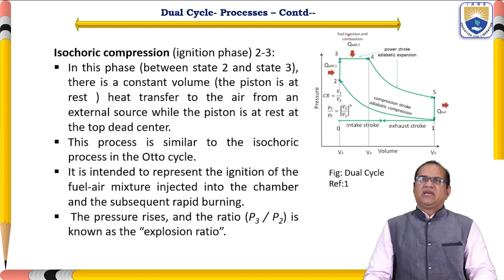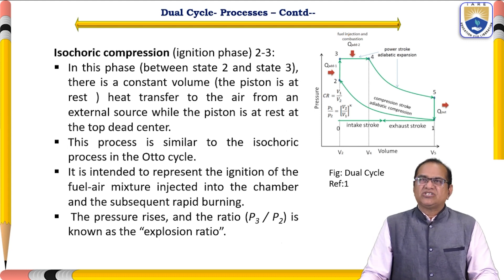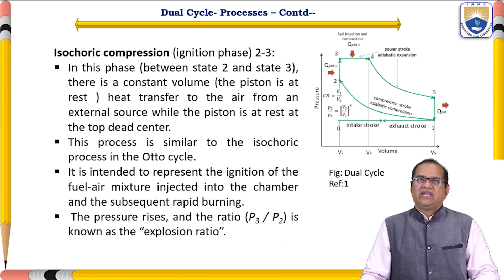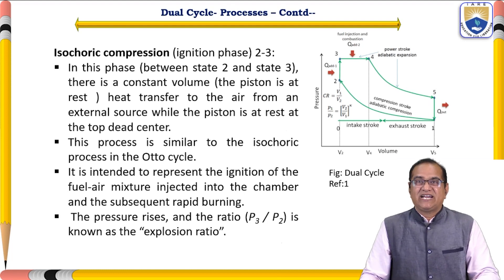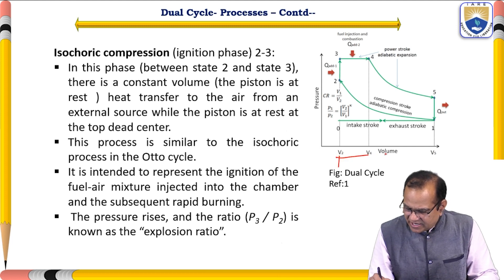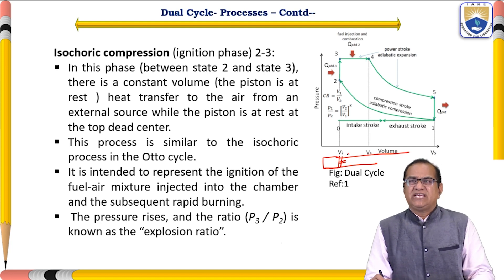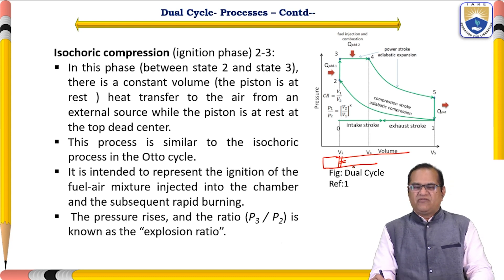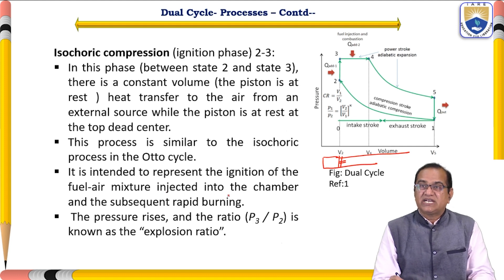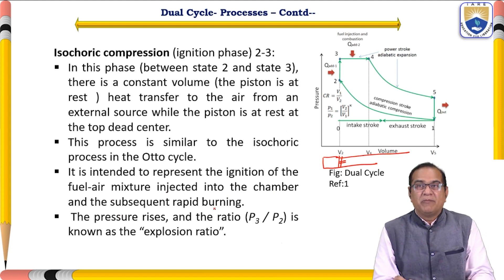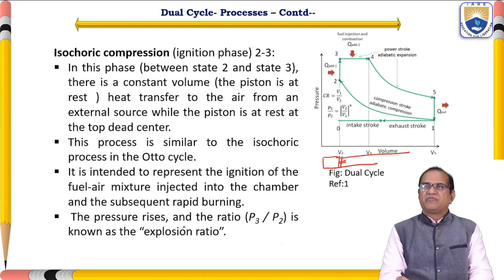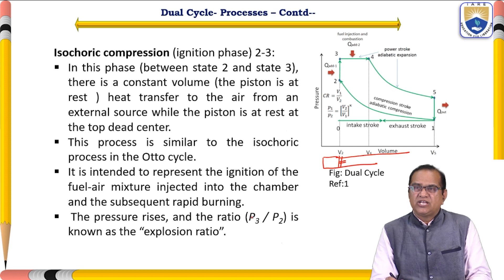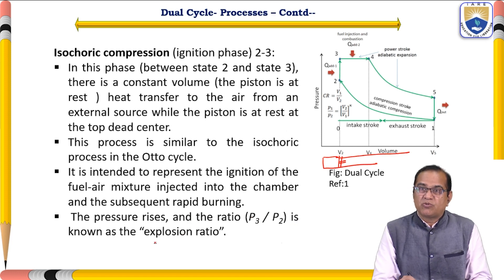In the phase between state two and state three, there is a constant volume process — the piston is at rest. Heat is transferred to the air from an external source while the piston is at rest at the top dead center. This process is similar to the isochoric process of the Otto cycle and represents the ignition of the fuel-air mixture and the subsequent rapid burning. The pressure rises and the ratio P3 by P2 is known as the explosion ratio.